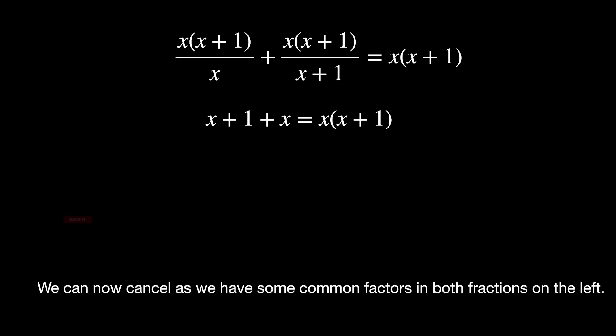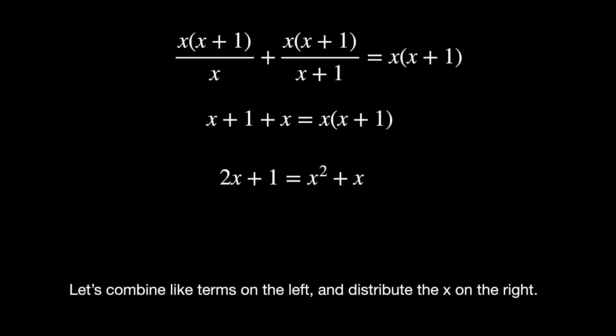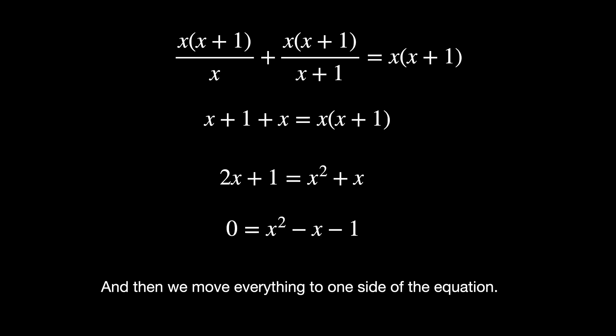We can now cancel as we have some common factors in both fractions on the left. Let's combine like terms on the left and distribute the x on the right, and then we move everything to one side of the equation.